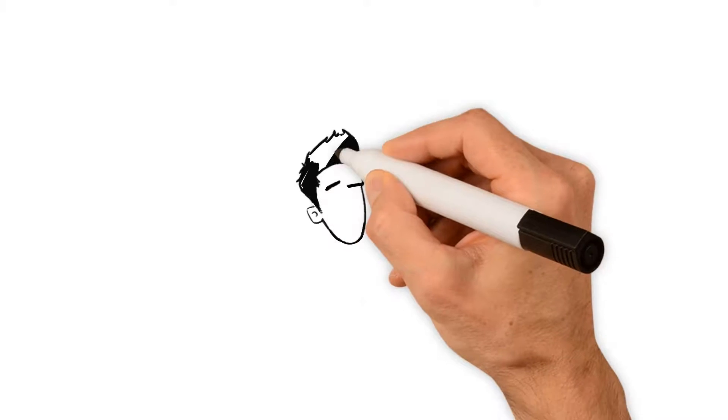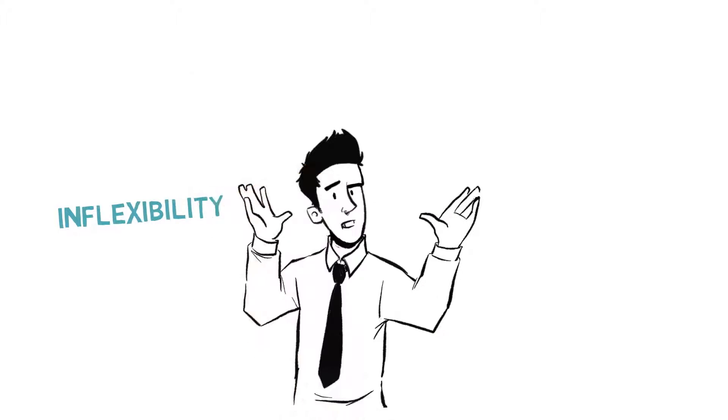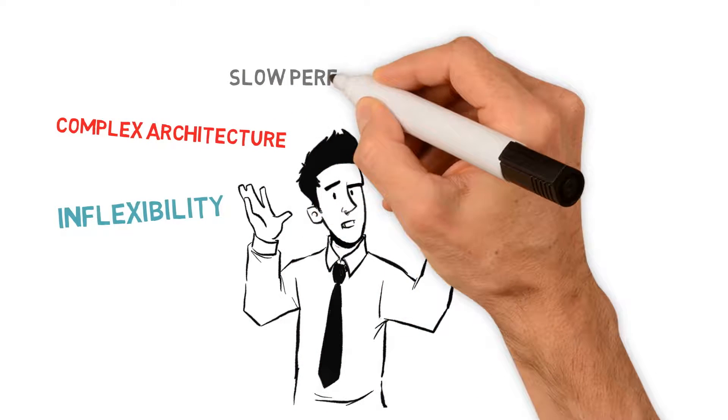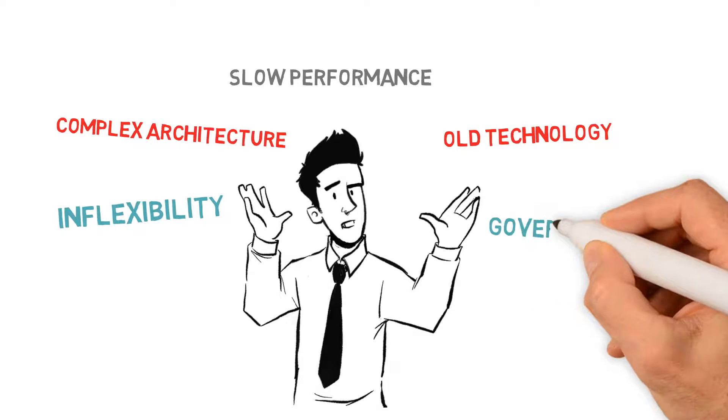These difficulties were down to five main issues: inflexibility, complex architecture, slow performance, old technology, and lack of governance.